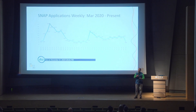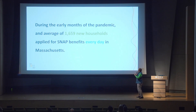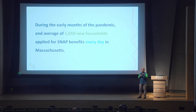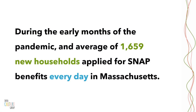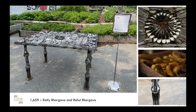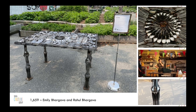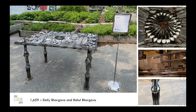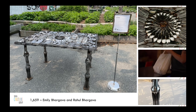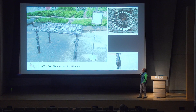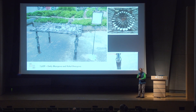The actual number is that on average during that time, there were 1,659 new households applying for SNAP benefits every day in Massachusetts — saying we need help with money for food. It's a shocking, staggering number. This chart might engage people in this room, but it does not engage people outside of this room. So we decided to do something different: we made a data sculpture. We spent a few months collecting 1,659 pieces of cutlery, and my wife welded them into a full-size table weighing about 150 pounds.